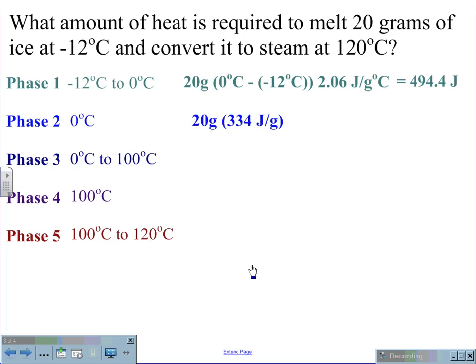At phase 2, 20 grams times 334 joules per gram. There is no change in temperature. This is a horizontal phase change, giving us a value of 6,680 joules.